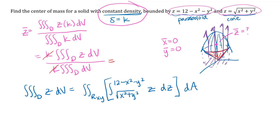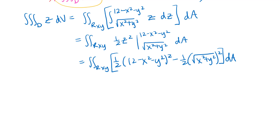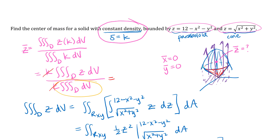Integrating z with respect to z gives one half z squared, and I plug in the limits of integration. I'll do simplifying after converting to polar. To find the xy region, I need to find where the cone and paraboloid intersect, which gives the radius of the shadow circle in the xy-plane. I'll rewrite the cone equation as z squared equals x squared plus y squared and substitute into the paraboloid equation.